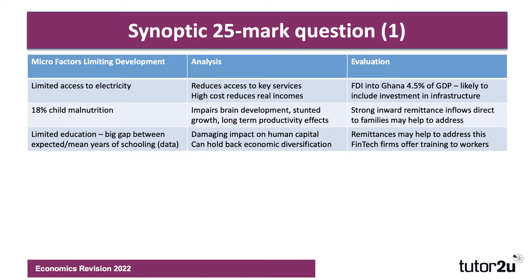On the evaluation side, there is a lot of FDI coming into Ghana — 4.5% of GDP, as given in extract four. A lot of that investment might be in infrastructure: power, transportation, telecoms. So if Ghana can attract FDI into their economy, that could help address that micro factor of limited electricity access.